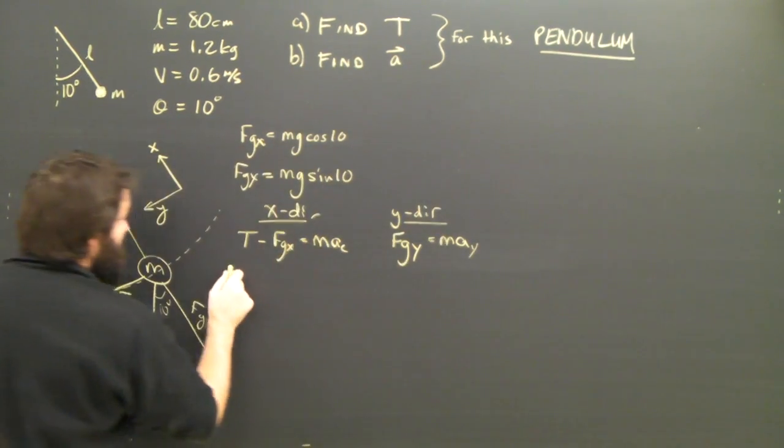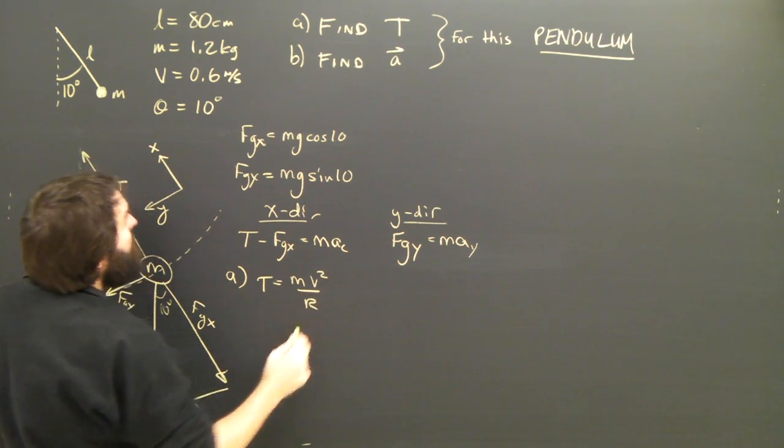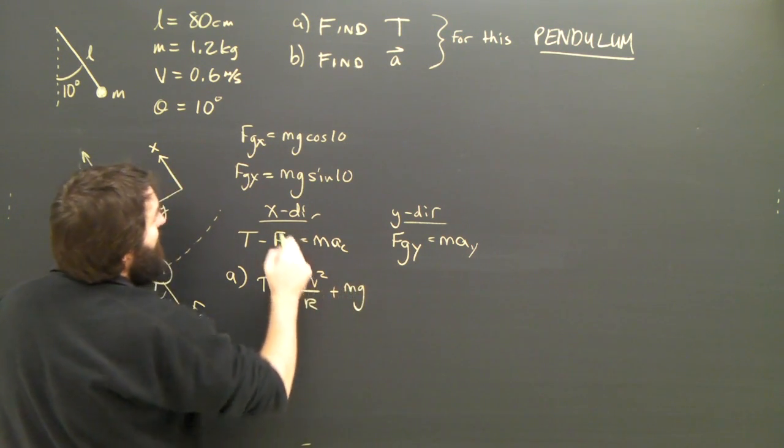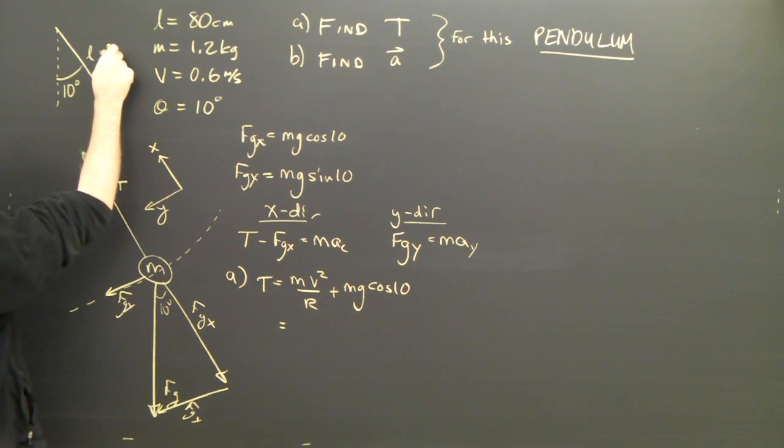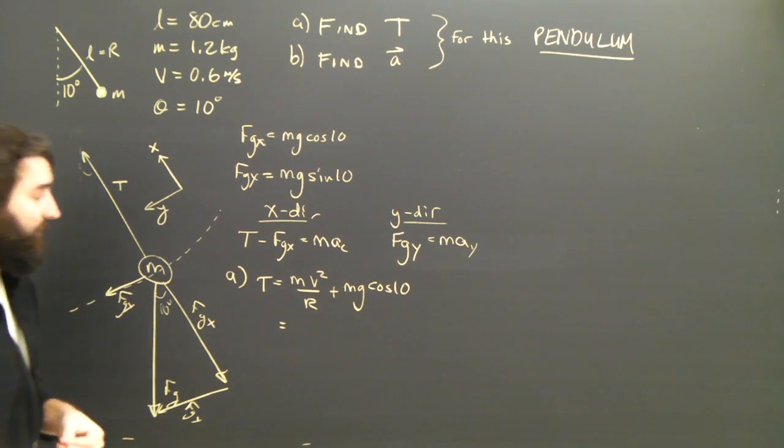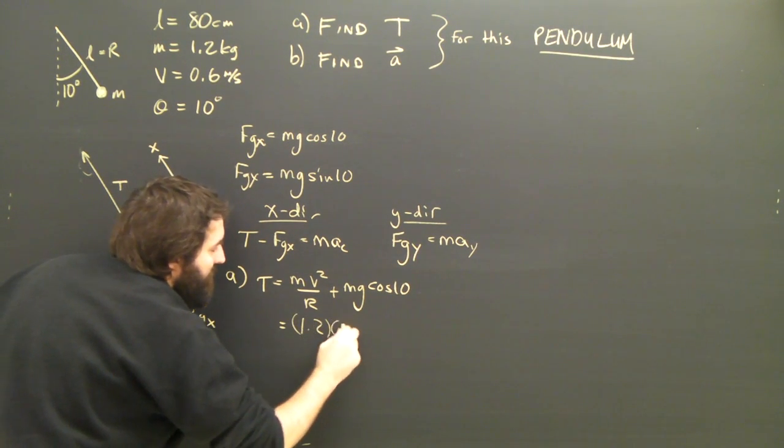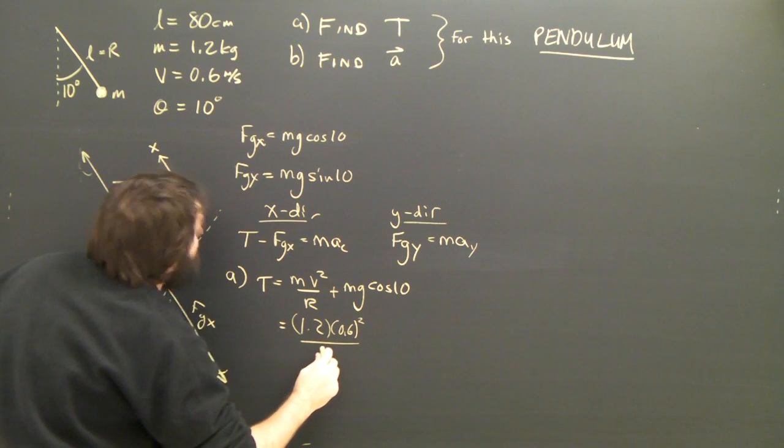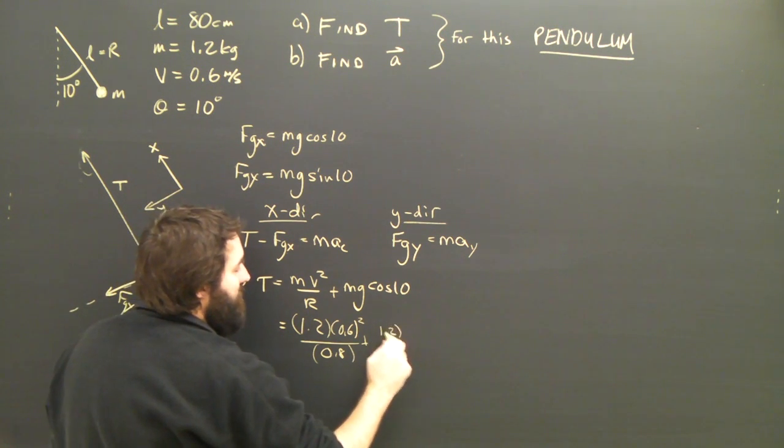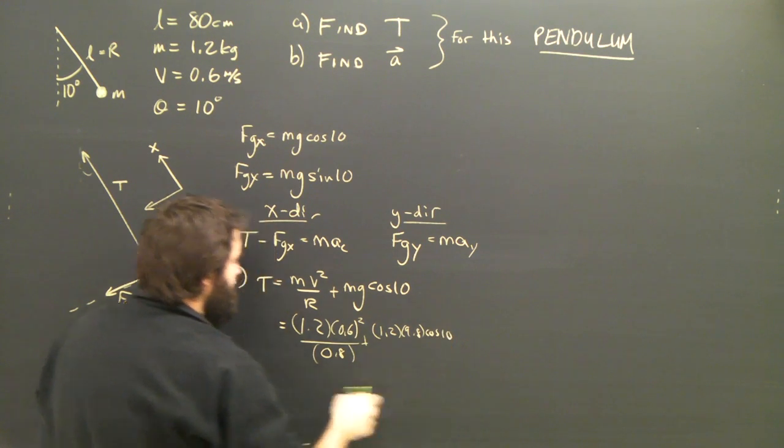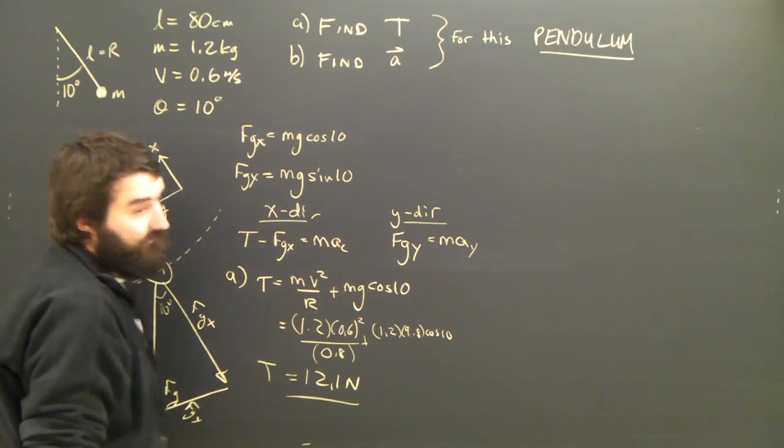So for part a, I look over here, and I say T is m v squared over r, plus mg x, which is cos ten. And then r is equal to l, because that is the radius through which this thing is turning currently. Dumping all my numbers in, I get 1.2 times 0.6 squared over 80 centimeters, which is, of course, 0.8 meters, plus 1.2 times 9.8 cos ten. Which, when you grab your calculator and figure it all out, should give you about 12.1 newtons. And so that's the answer to day, 12.1 newtons.